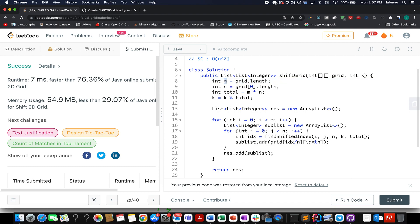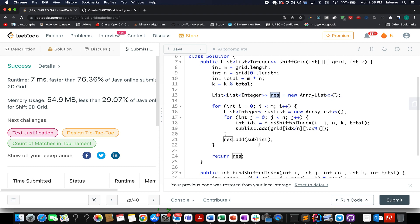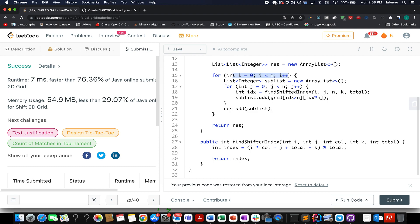We create four variables. We use m number of rows, number of columns and total m into n and we do a modulus of k by total so that we don't have to operate a lot of time for higher values of k. Then we build our answer result which is result. We iterate through the matrix in row-wise column-wise fashion. i equals to 0 is less than m, j equals to 0, j is less than n and we go and identify the shifted index.